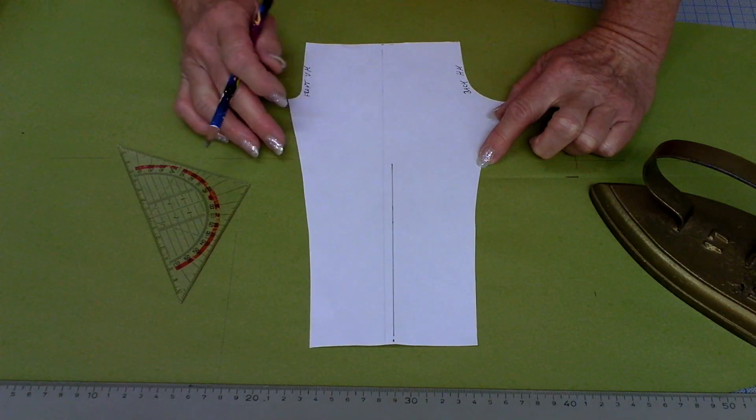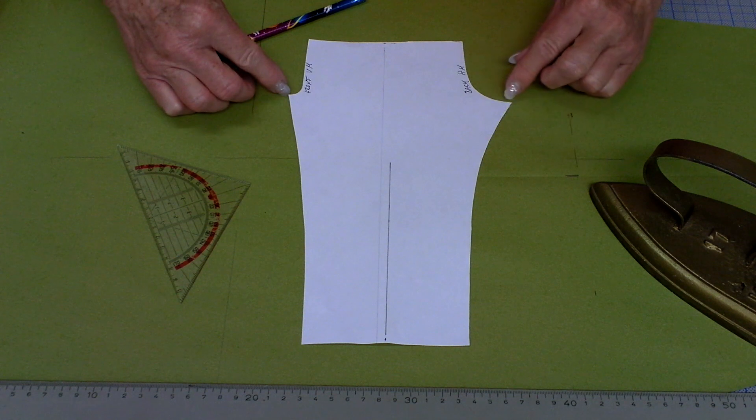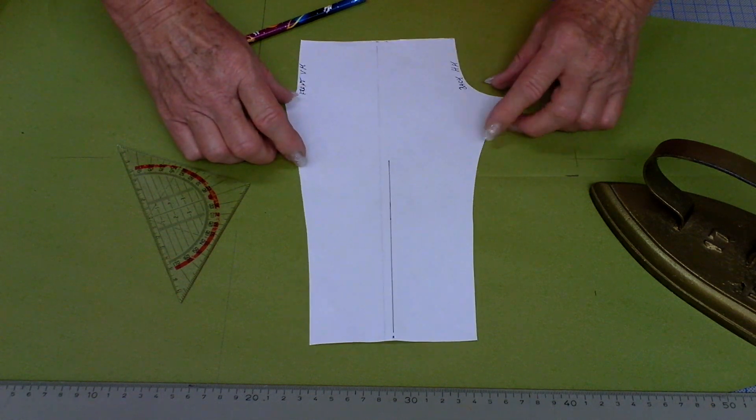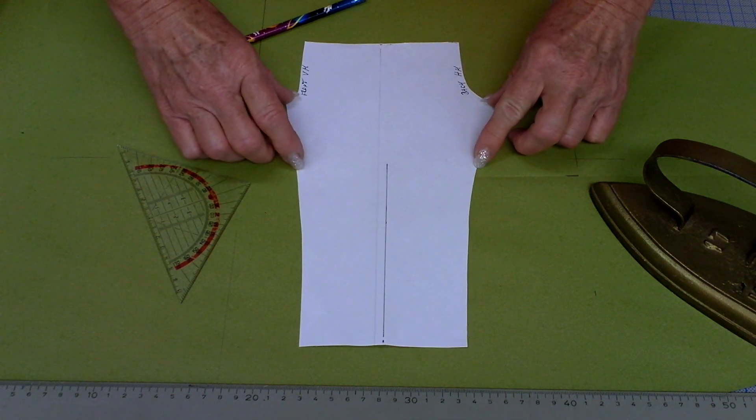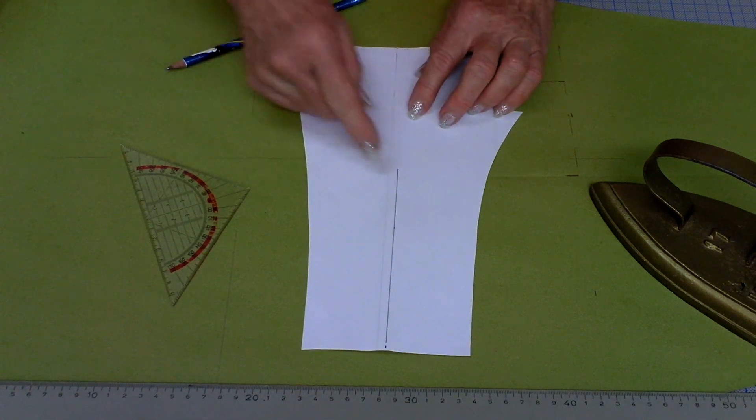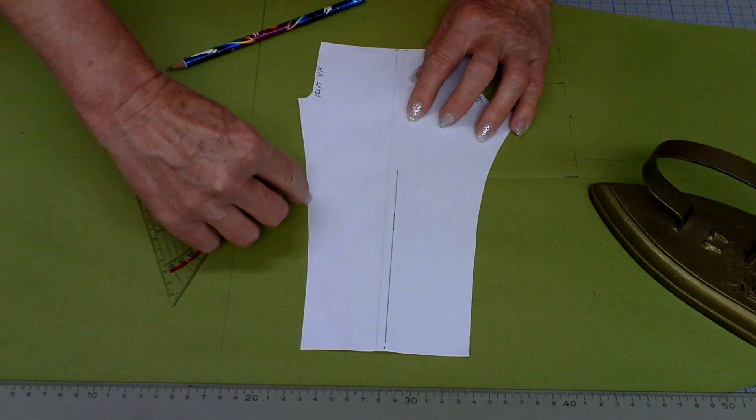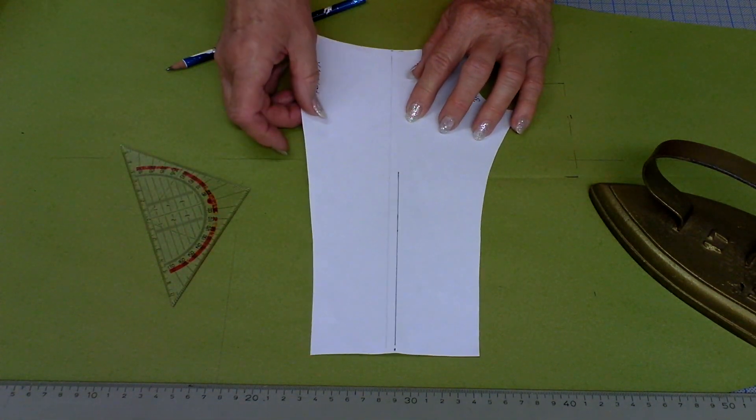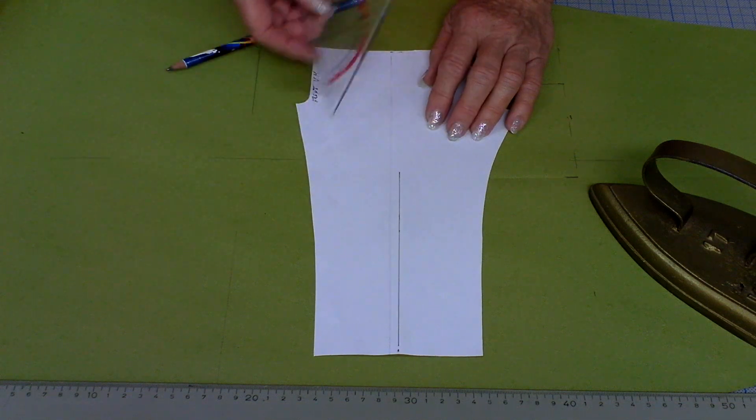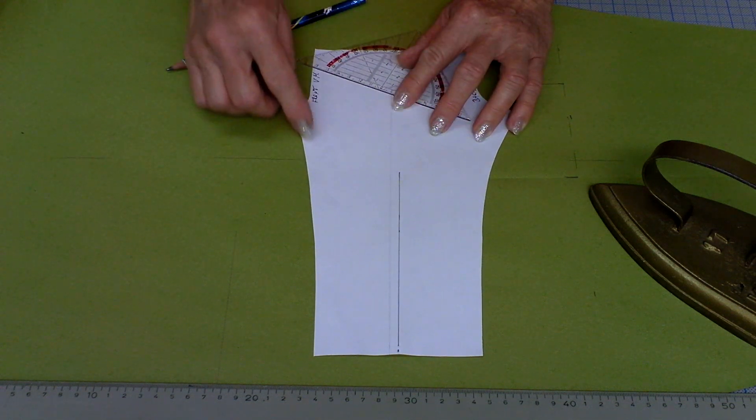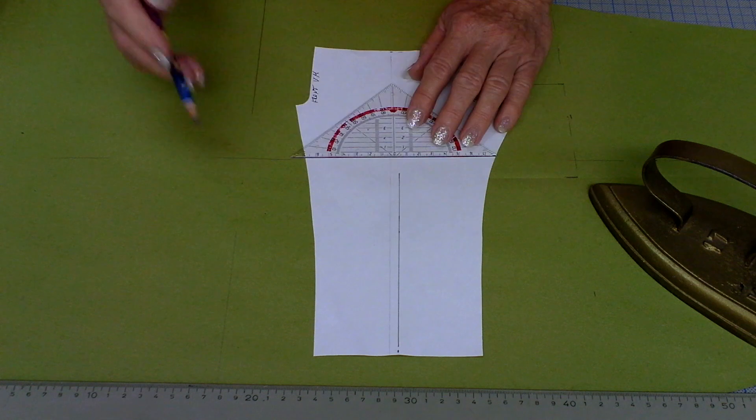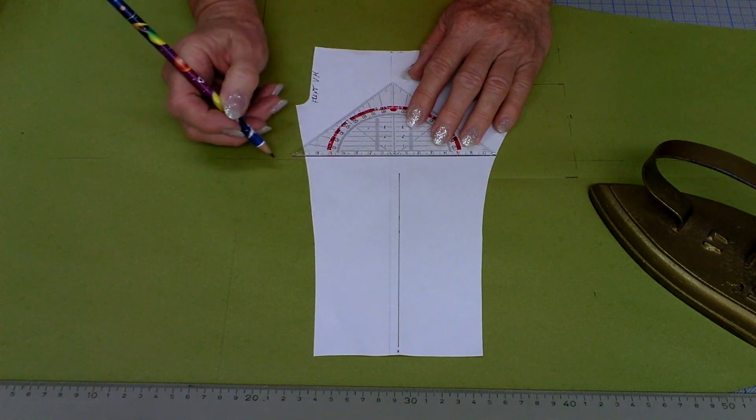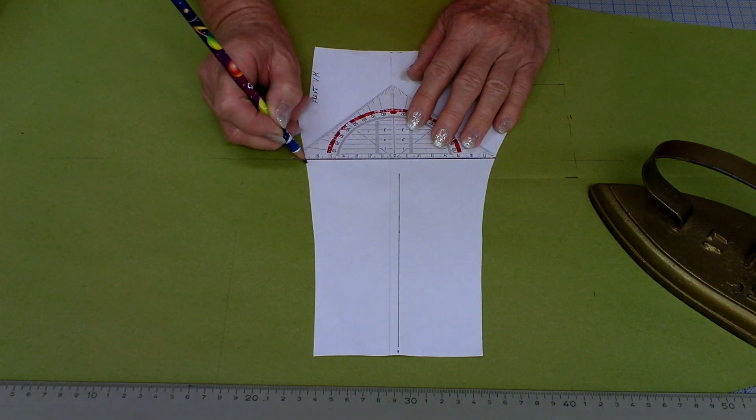Now just mark this. And now it is important that you measure from these parts on downward on your pattern how far you want to go down to now cut out the part that we will need for our new pattern. I for my trousers decided on 25 centimeters.